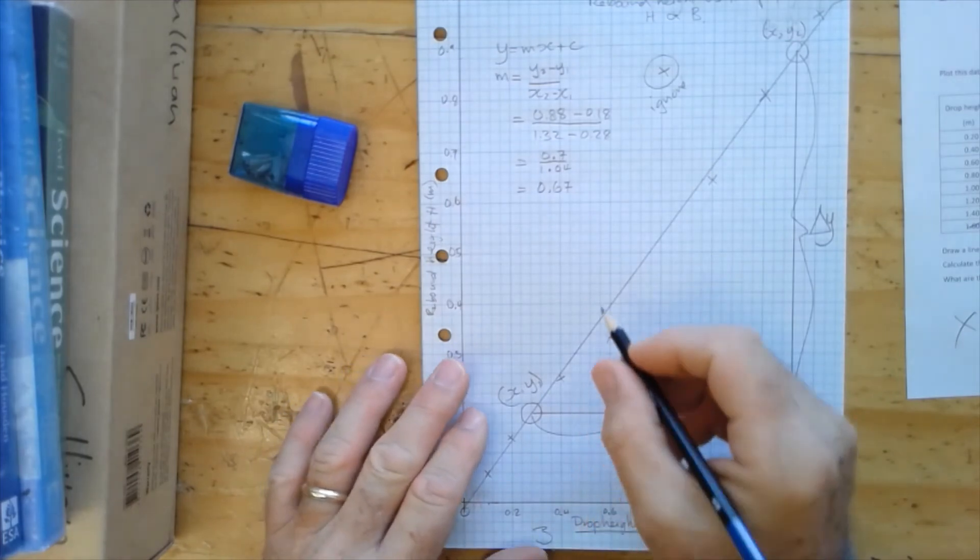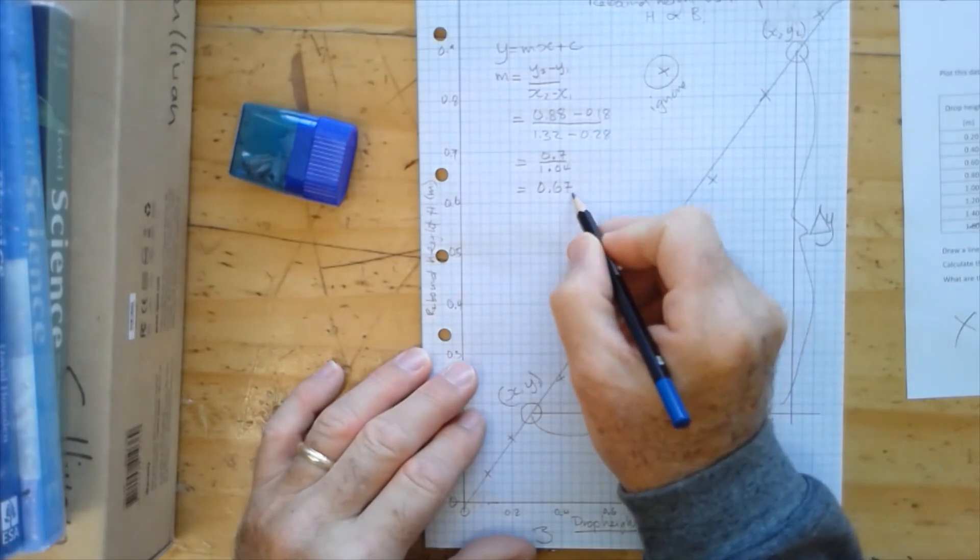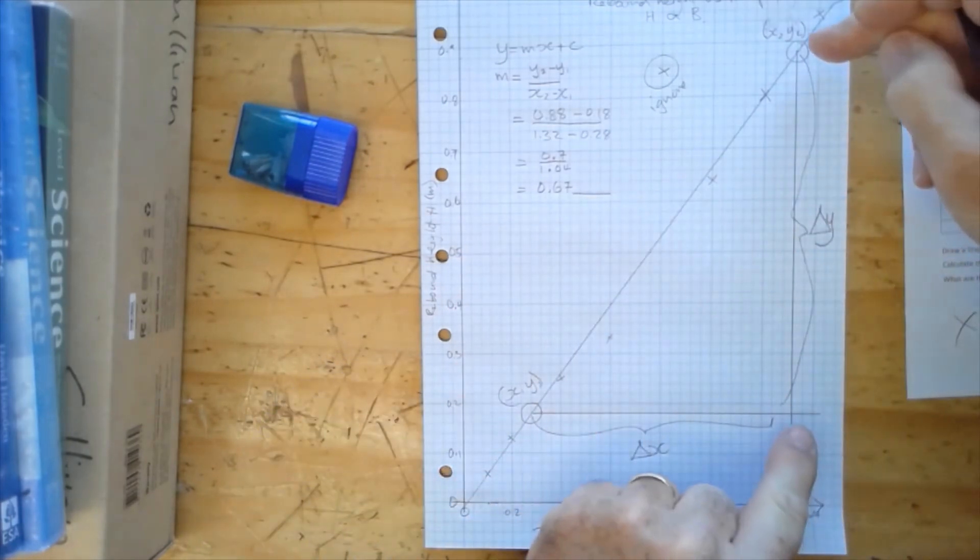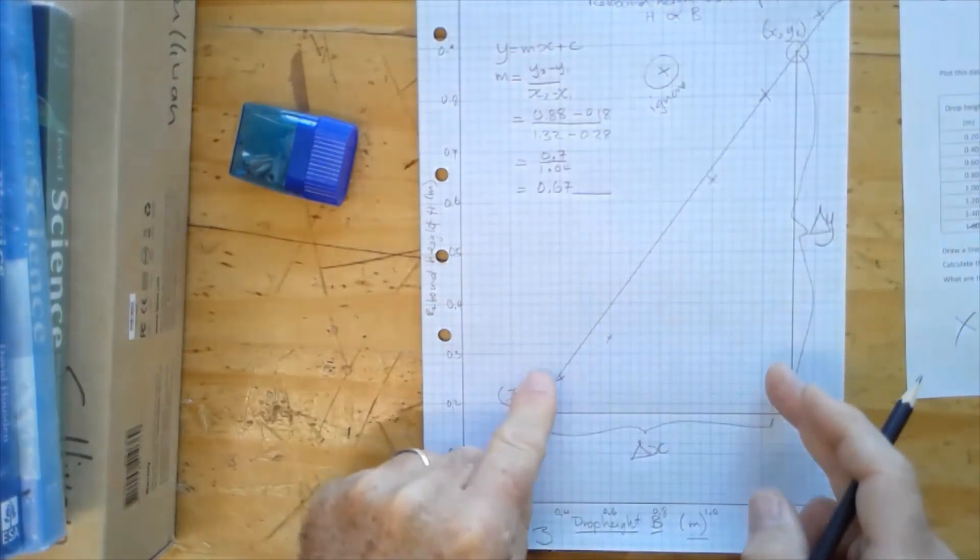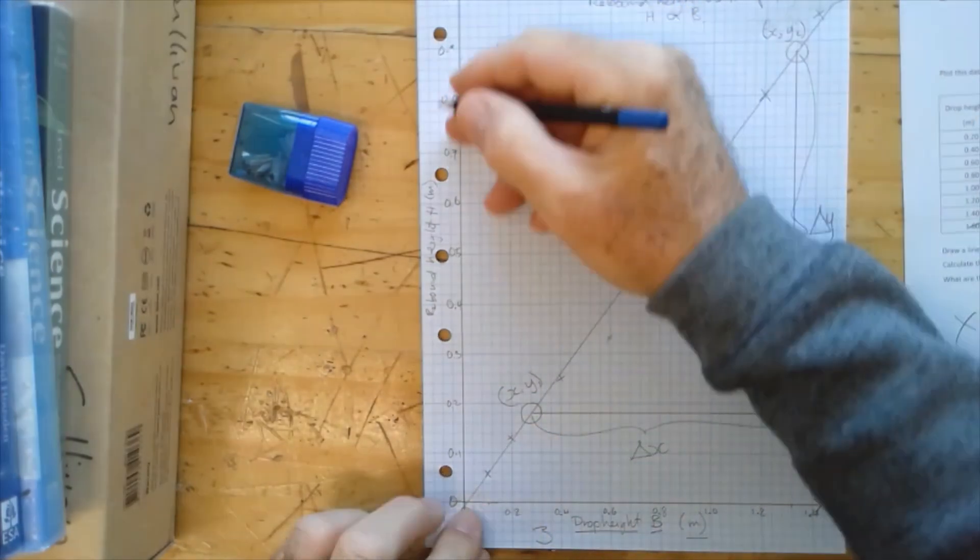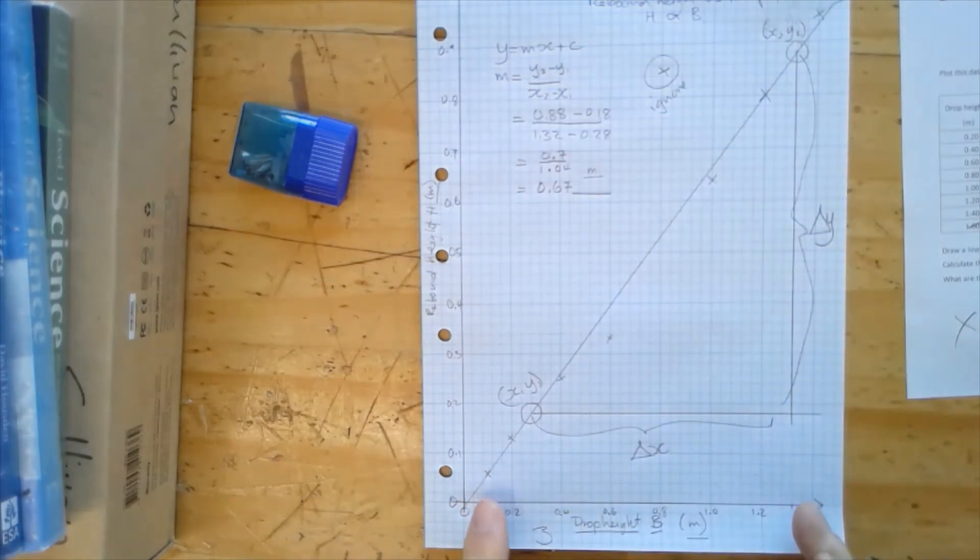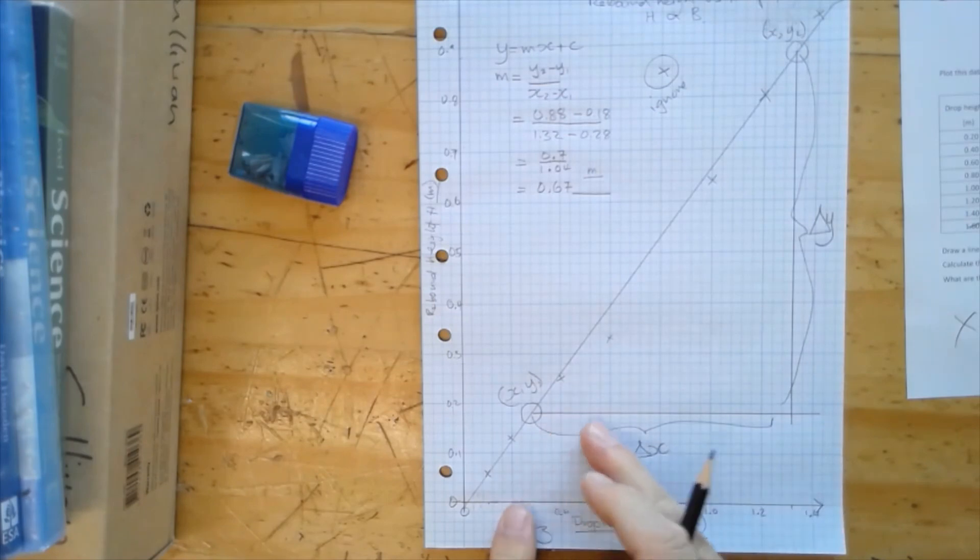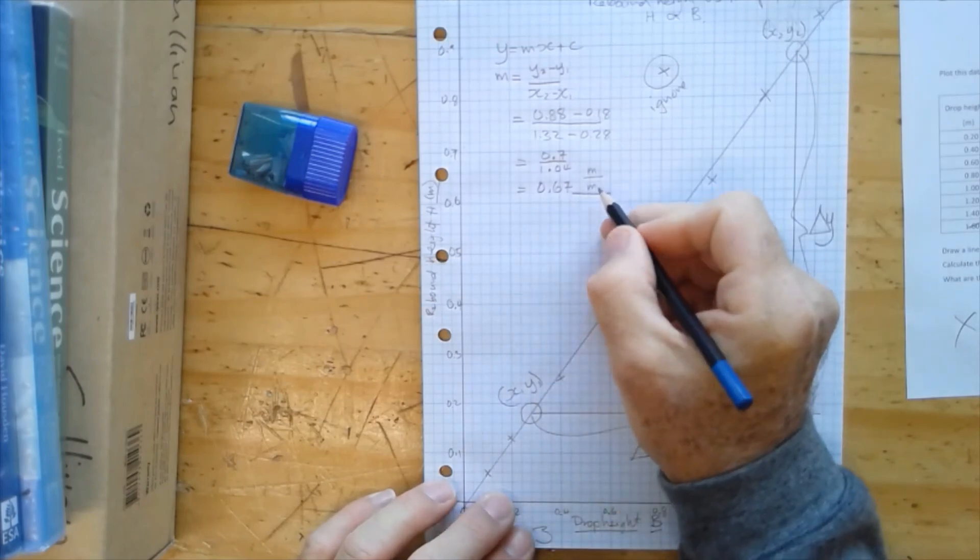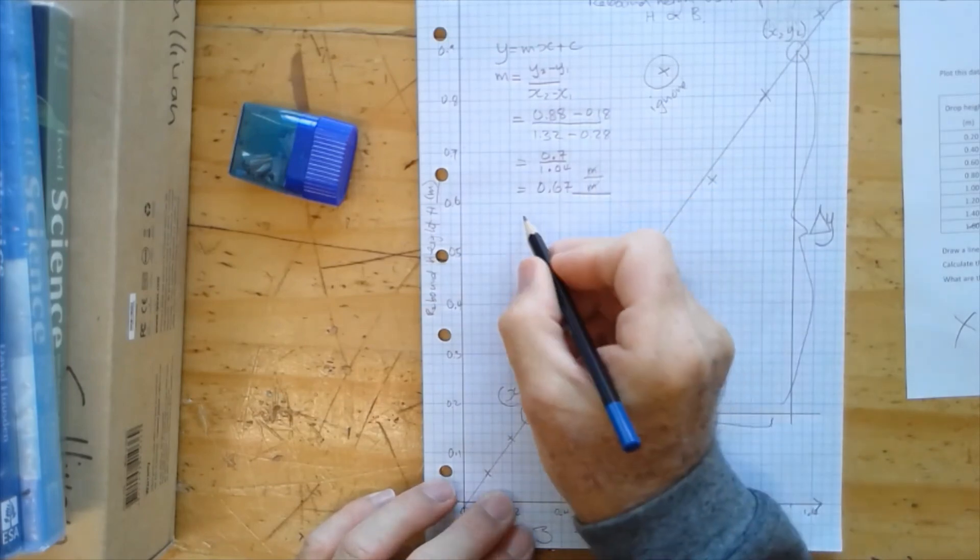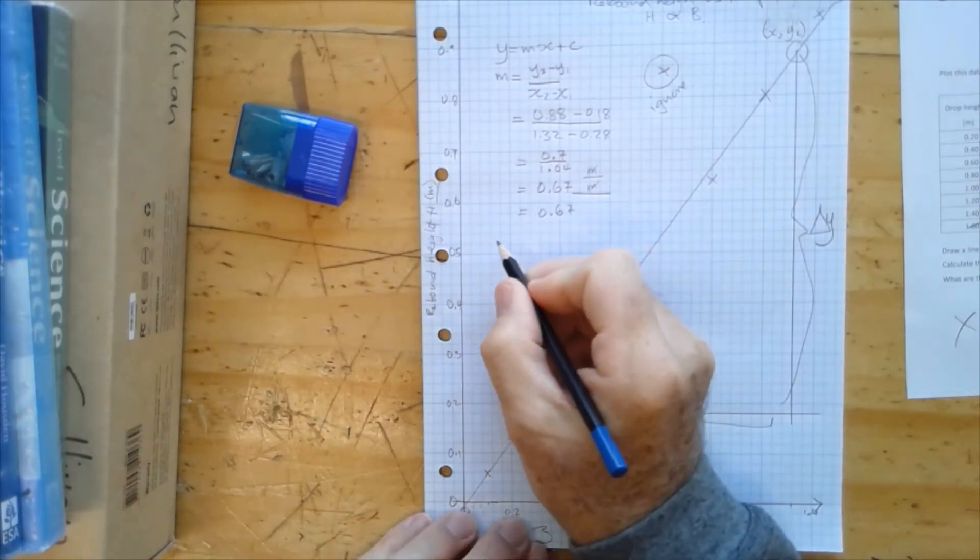So that's equal to 0.67. The gradient is 0.67, and we've got to now include our units. And the units will be whatever is the y value divided by whatever is the x value. Our y is meters, so we're going to have meters divided by our units for the x-axis, which is also meters. So we've got 0.67 meters divided by meters.